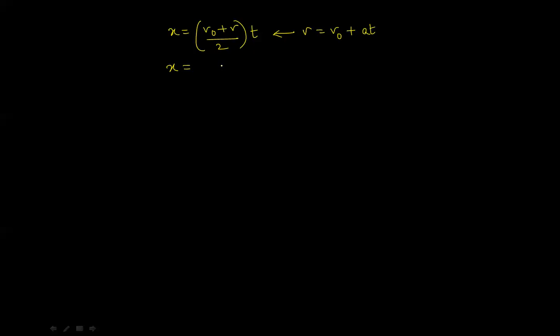Essentially, what we have here is, X is equal to, remember that V0 stays, plus V is equal to another V0 plus AT over 2. Which is 2V0 plus AT over 2 multiplied by T.